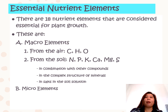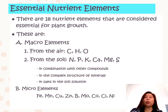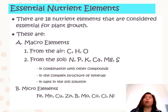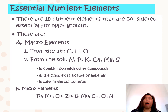The micro elements include iron, manganese, copper, zinc, boron, molybdenum, cobalt, chlorine, and nickel. The difference between macro and micro elements is that macro elements are those nutrient elements needed by plants in large amounts, while micro elements are those nutrients needed by plants in minimal amounts.